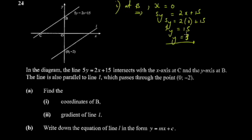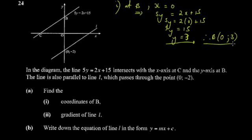At this point you can just stop and the marker will know from your working that you've divided by 5. If you want, you can also show that working — it's still fine. Therefore B has x-coordinate 0 and y-coordinate 3, so B = (0, 3).